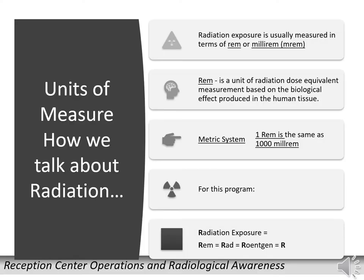REM is the term used to describe the amount of radiation you have received that addresses the biological effect produced on human tissue. For this program, the word or letter R also designates the equivalency of exposure, since we are directly concerned with beta and gamma exposure only. The metric system is used to address large or small amounts of radiation; one rem equals 1,000 millirem.